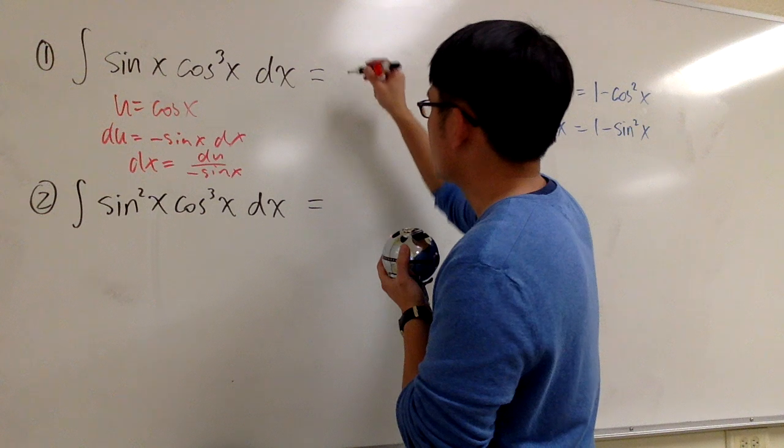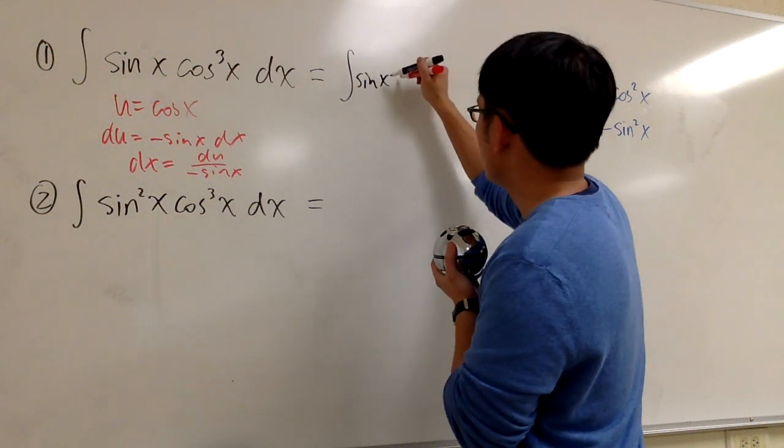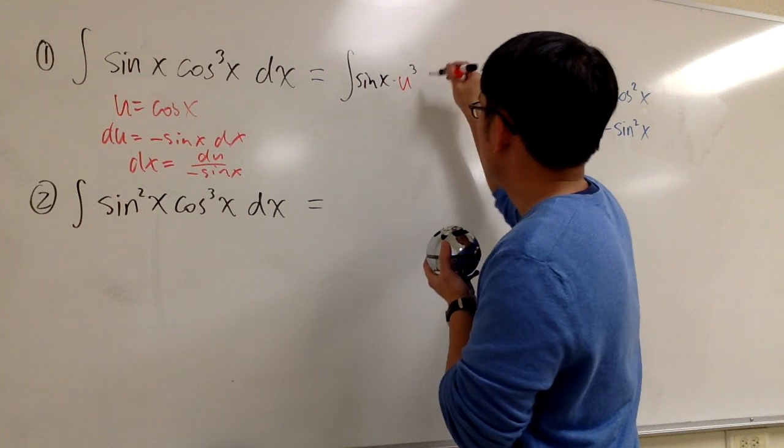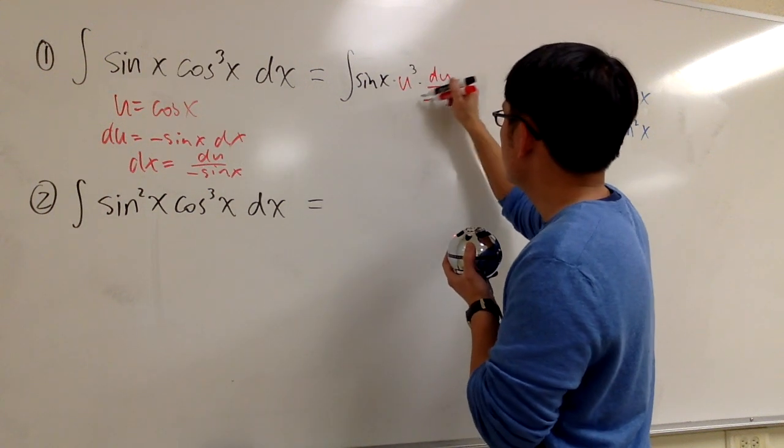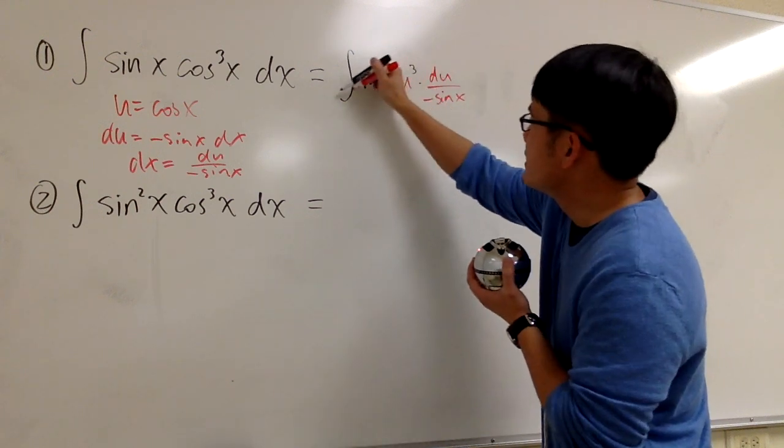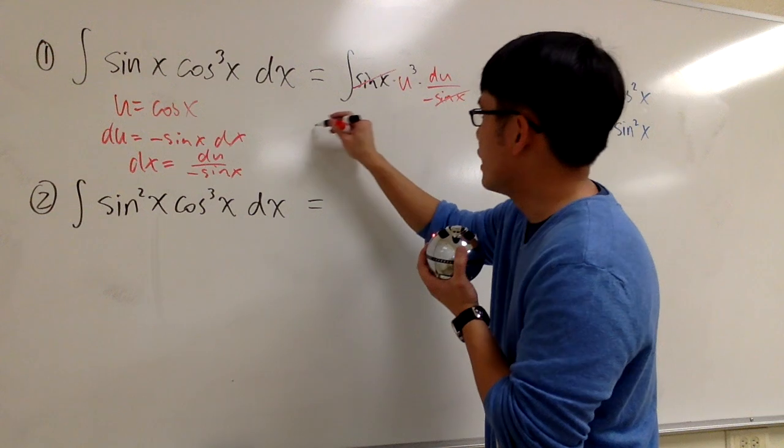Let me just work this out real quick for you guys. So the integral of sine x, cosine becomes u, so we have u to the third power, and then dx is that, which is du over negative sine x. And as I said, this sine x and that sine x will cancel each other out, and then we can bring the negative to the outside.